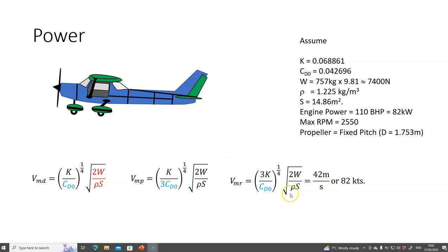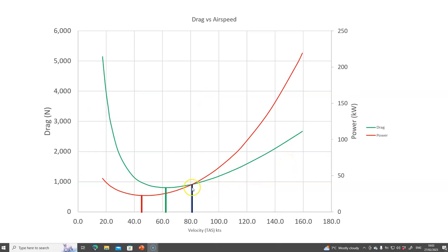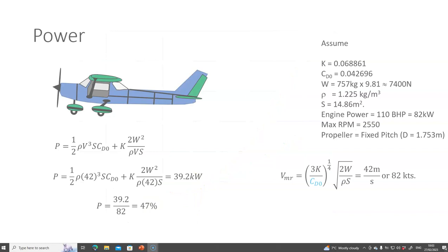This equation comes from the Bregge range equation. Deriving that was just too long for this video, but I hope I showed you the similarity of the formulas. There's our 82 knots.